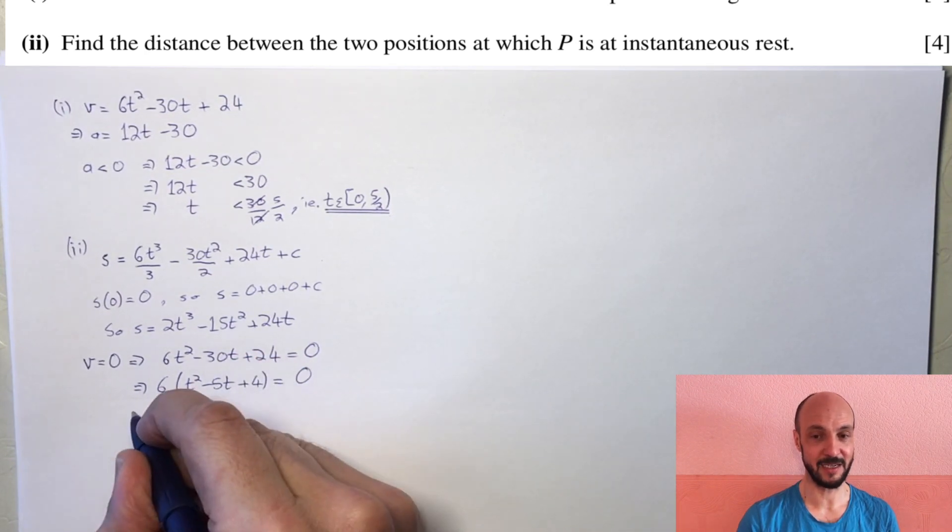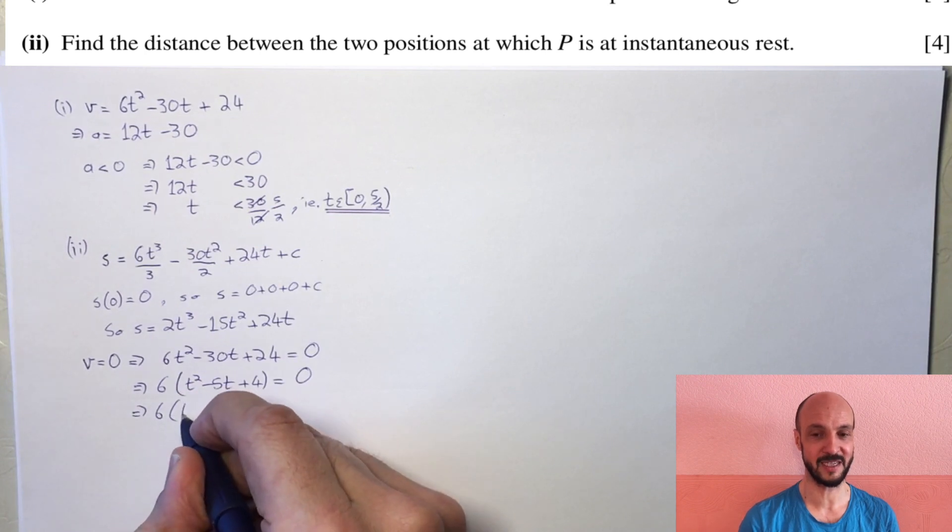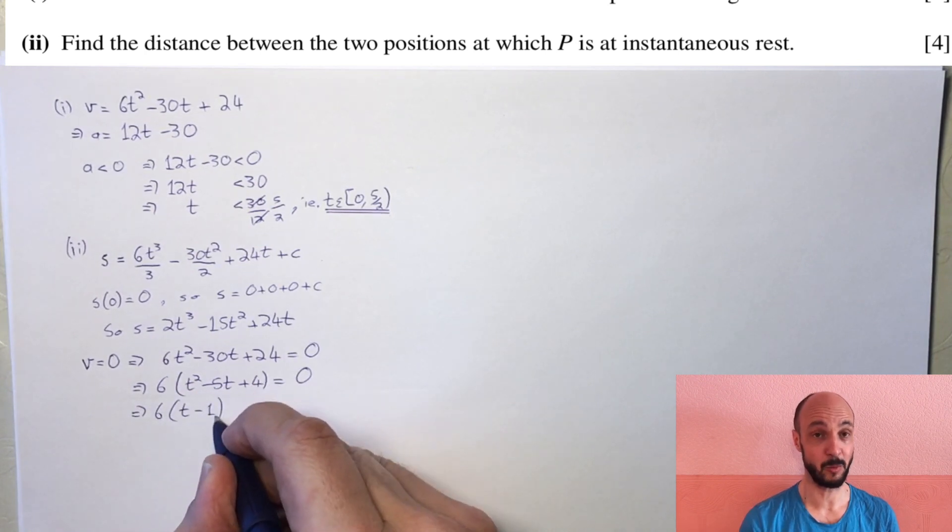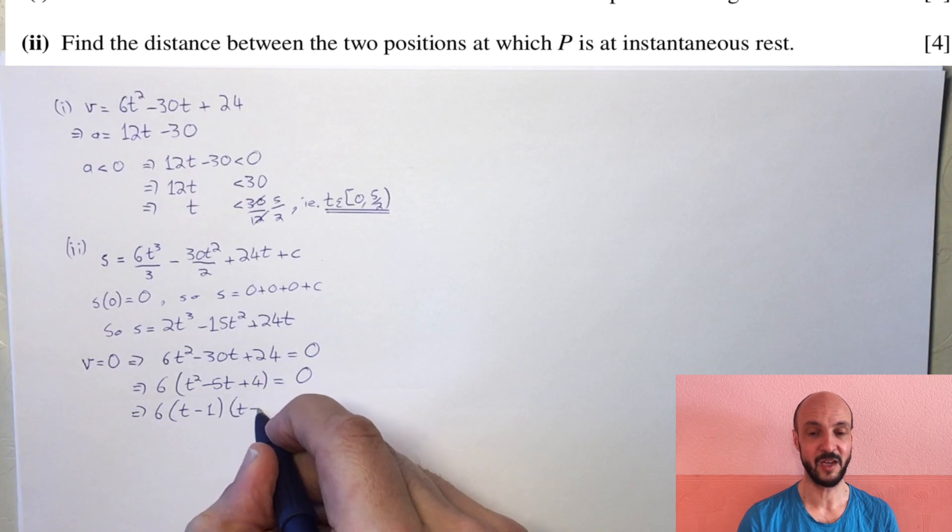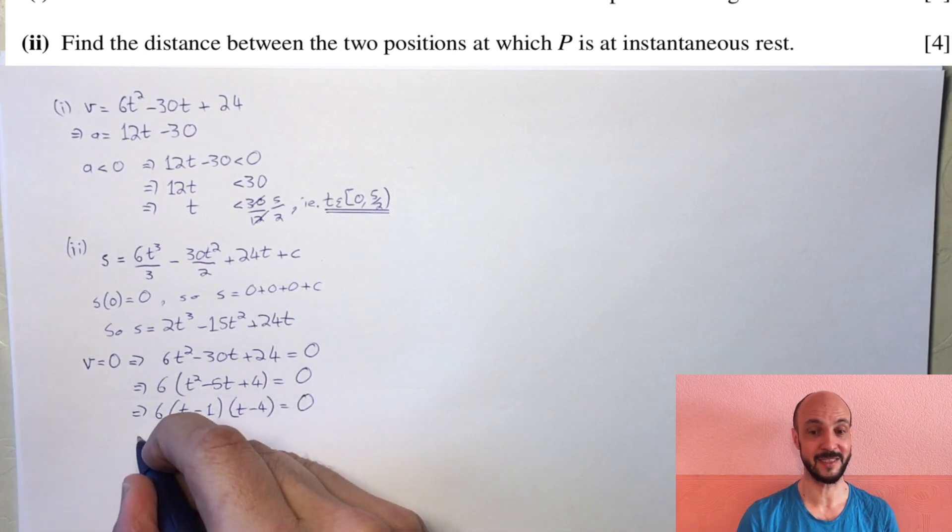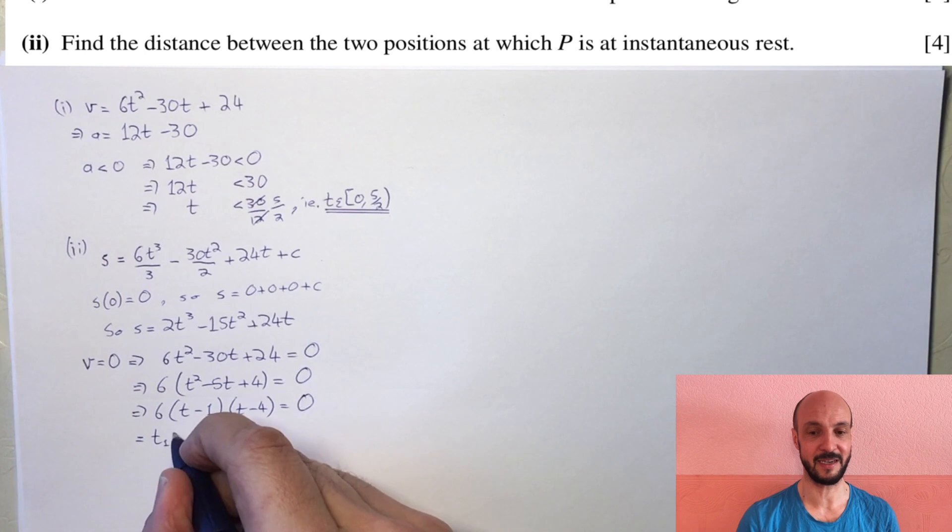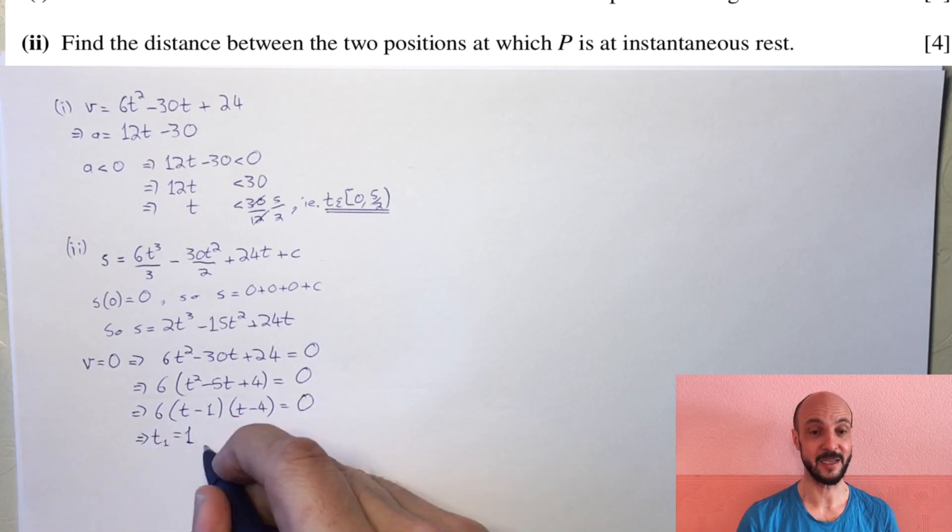This factorizes to t minus 4 times t minus 1 equals 0. So the two times it's at rest are t equals 1 and t equals 4.